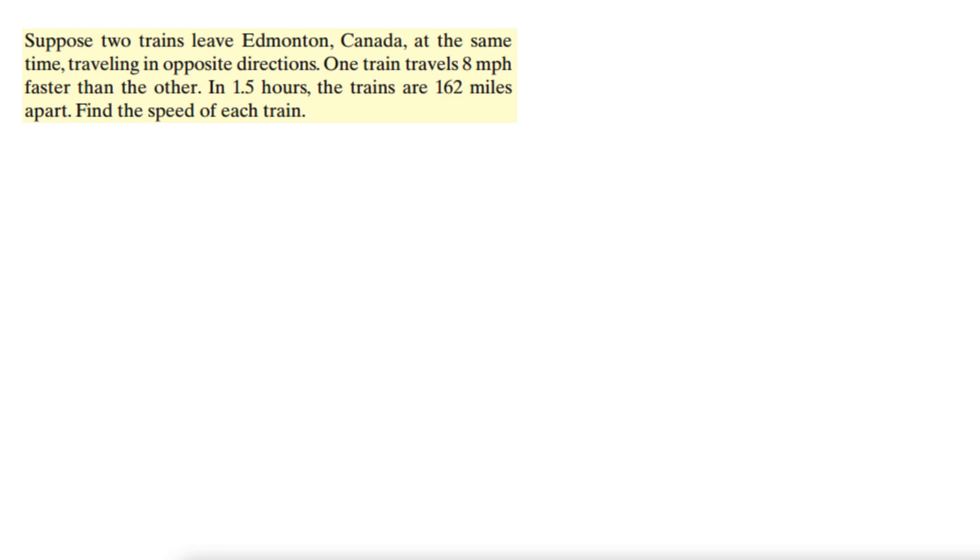Here's another example where trains are traveling in opposite directions. Suppose two trains leave Edmonton, Canada at the same time, traveling in opposite directions. One train travels 8 miles per hour faster than the other. In 1.5 hours, the trains are 162 miles apart. Find the speed of each train.